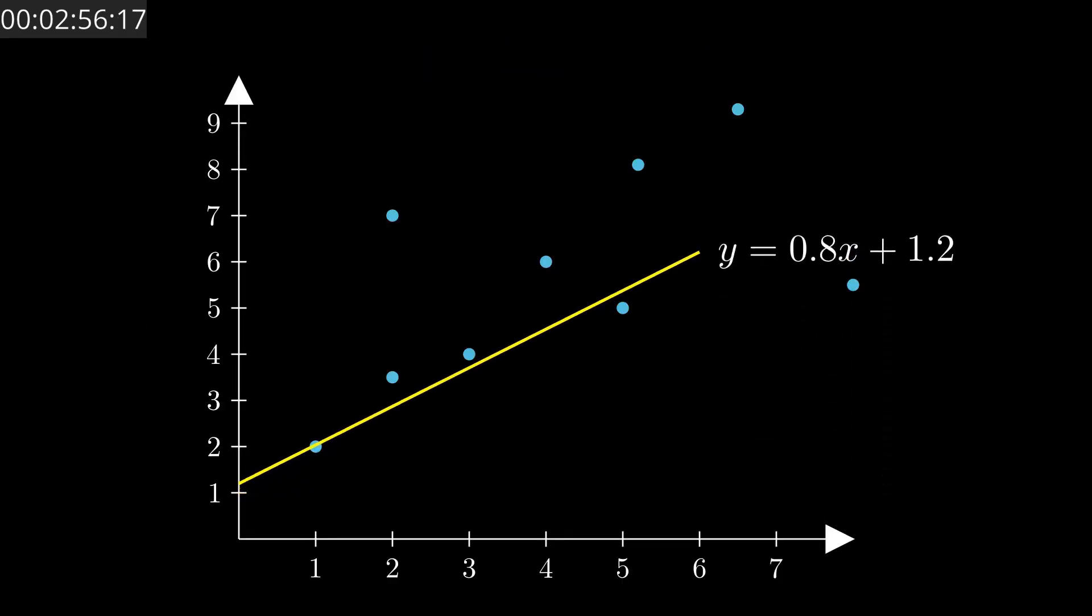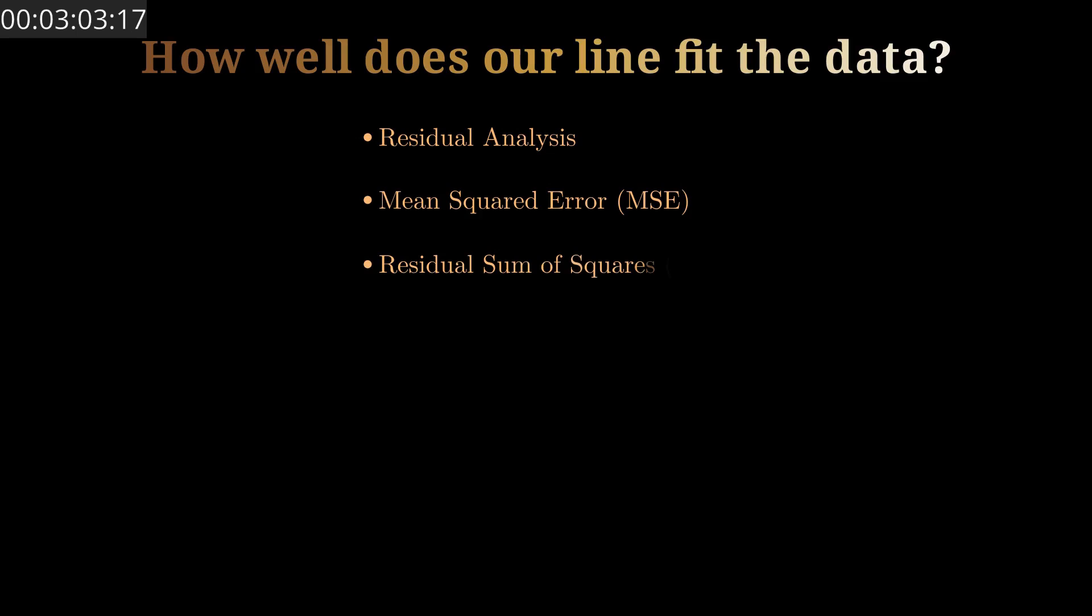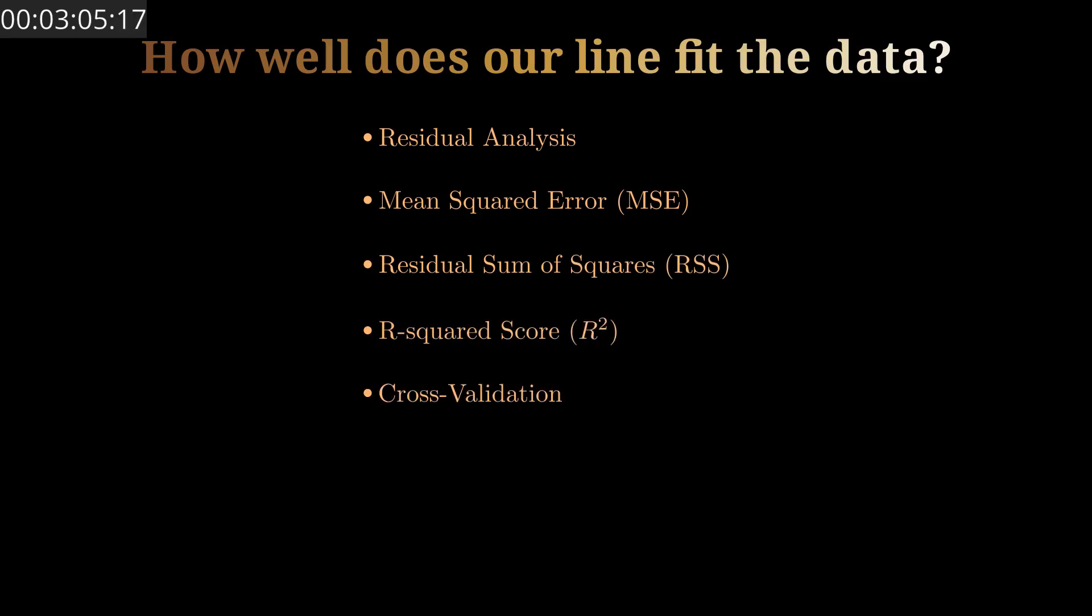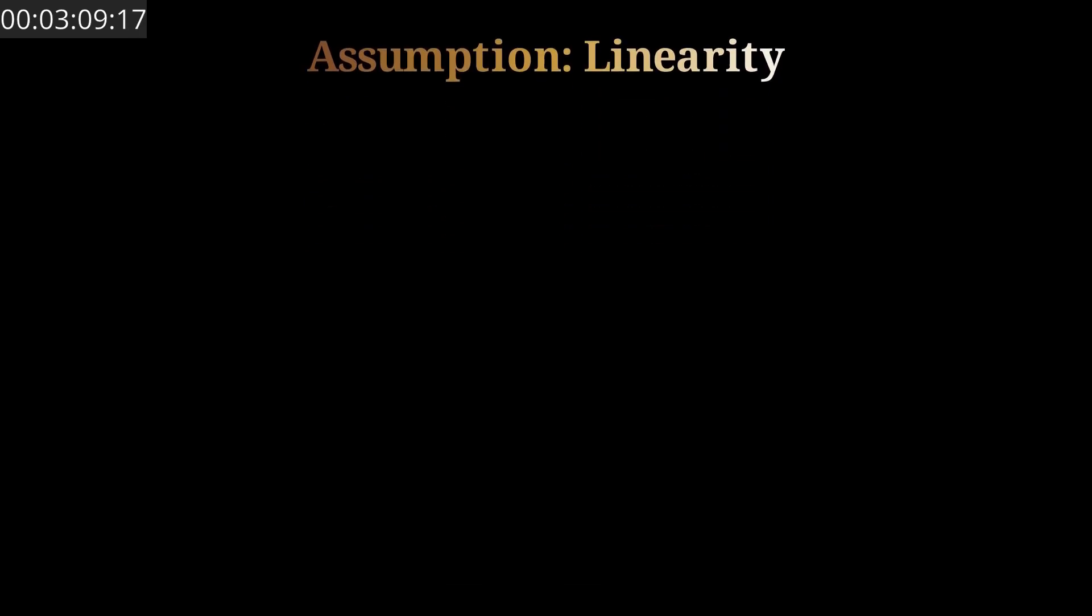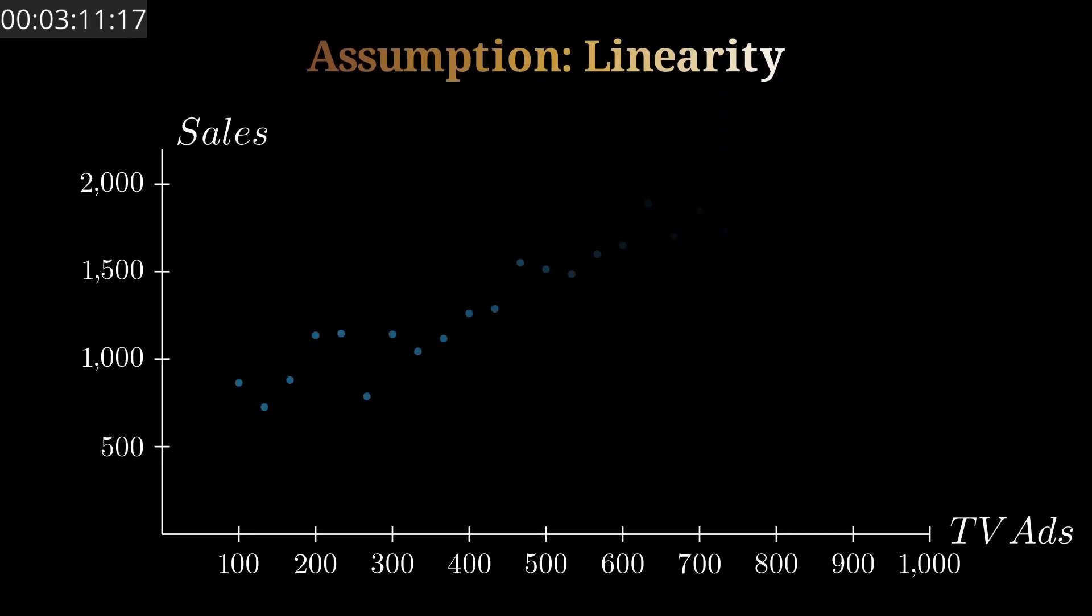Now, after we've fitted the line and everything's good, someone might ask, how well does the regression line fit the data? And can it make accurate predictions on future data? Here, there are ways and methods to validate the drawn line. Think about linear regression—it makes an assumption that the relationship between the response and the predictor is linear.